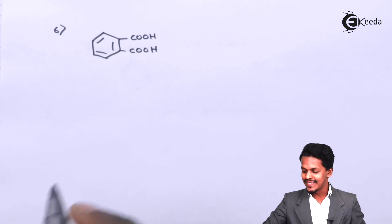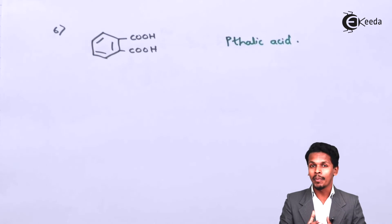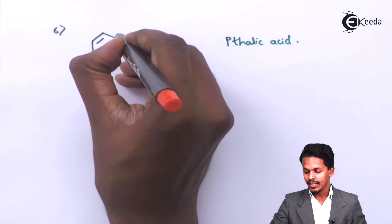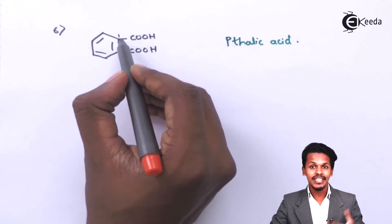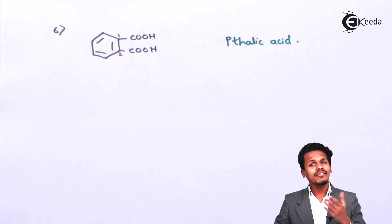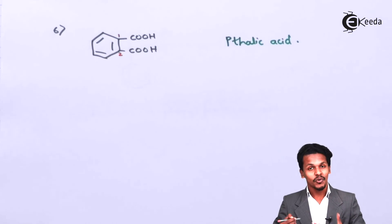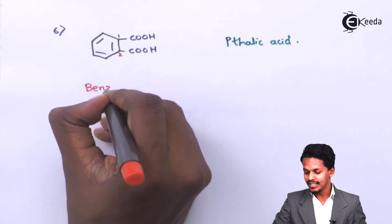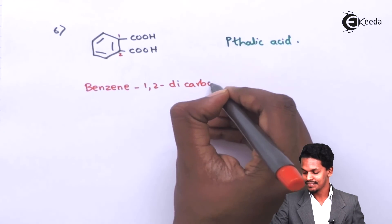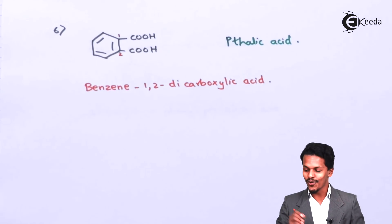The sixth example is the molecule commonly known as phthalic acid. To give IUPAC nomenclature, carbon number 1 is the carbon on the benzene ring where the first carboxyl group is attached, and carbon 2 carries the second carboxyl group. Since there are two carboxyl groups on the benzene ring, the IUPAC name is benzene-1,2-dicarboxylic acid.